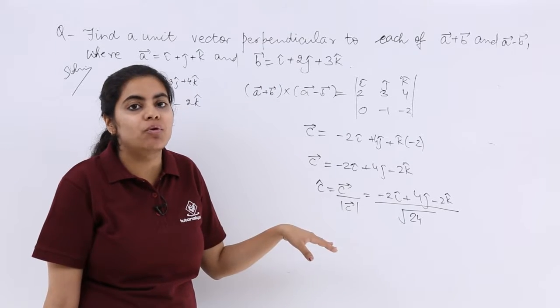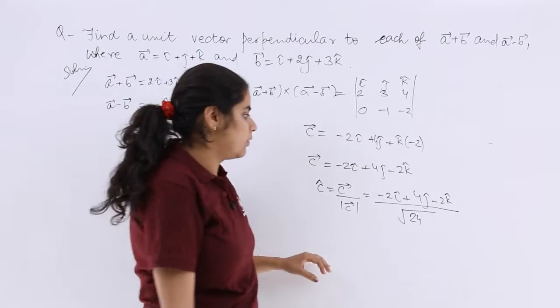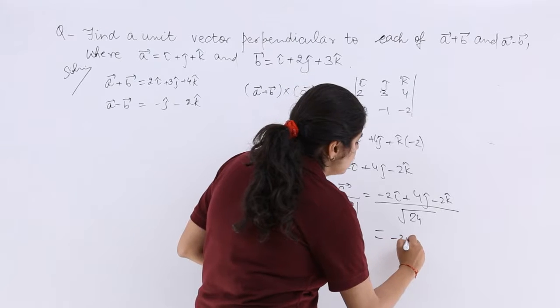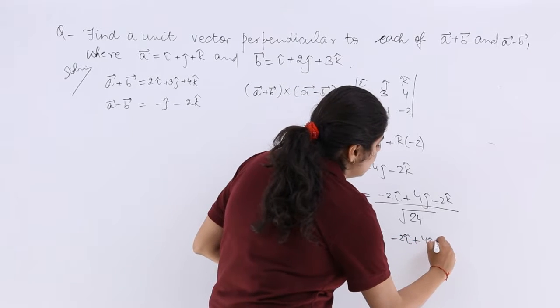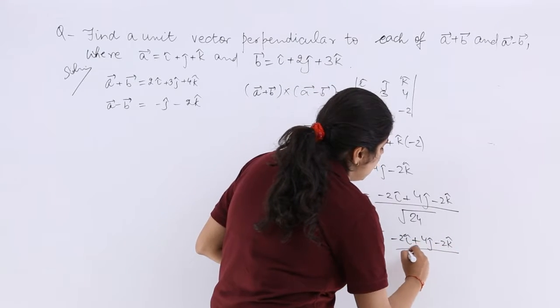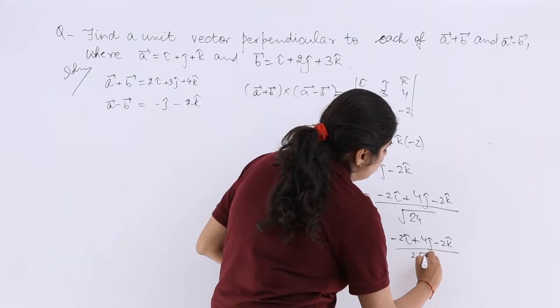So now see, root 24 is what? 4 into 6, right? So this is minus 2i cap plus 4j cap minus 2k cap upon 2 root 6.